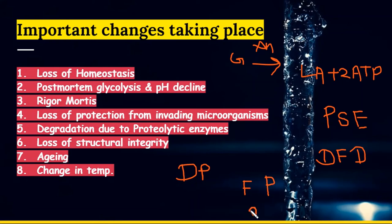During post-mortem, the body defense mechanism stops operating and membrane properties get altered. During conversion of muscle to meat, it is susceptible to microorganisms. Except for low pH, which is acidic in nature, most of the other post-mortem changes favor bacterial growth. So precautions should be taken.